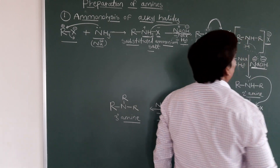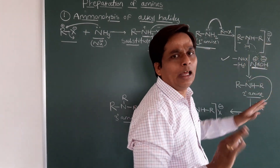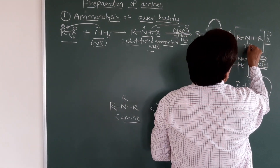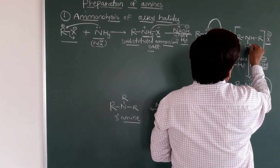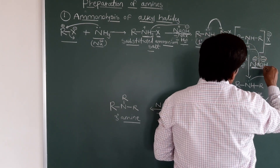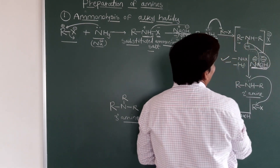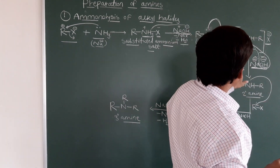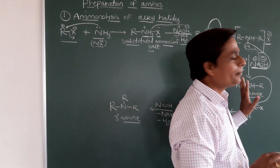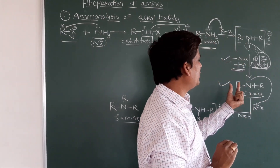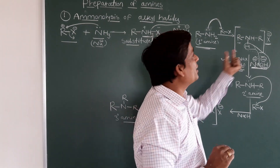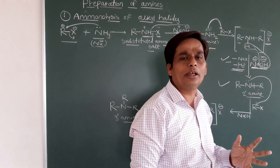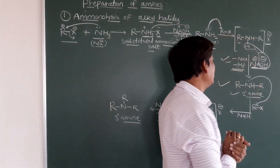After NaX is removed, one hydrogen from the NH2 group and the OH⁻ combine to remove H2O. What remains is R–NH–R, which is the secondary amine. So primary amine treated with alkyl halide gives an intermediate, then treatment with NaOH gives us the secondary amine.